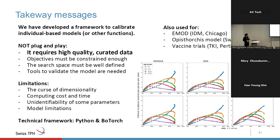There are of course many limitations: dimensionality, computing cost and time. We have some unidentifiability — every time we do calibration, we end up in a slightly different part of the space, so even though calibrations are comparable, we end up with different parameters. And there can also be model limitations, where the model simply cannot be calibrated well enough to some data. The framework is developed with Python and the BoTorch library.